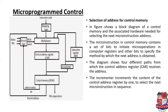Now the next topic is the selection of address for control memory. This figure shows the block diagram of control memory and the associated hardware needed for selecting the next micro instruction address. The next micro instruction address is a set of bits to initiate micro operations in computer registers, and other bits specify methods by which the next address is established.